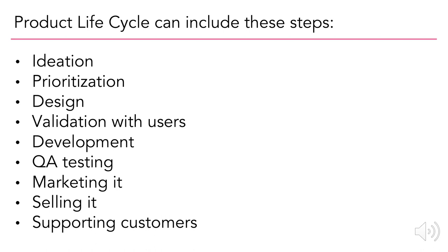The Product Life Cycle can include any of these steps. Ideation is essentially coming up with the ideas of what it is that we want to make, where we think we can make money, where we think people will buy things. So coming up with the features, the functions, the things that you ultimately want to build.